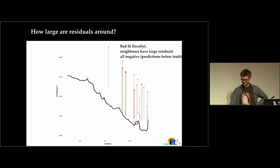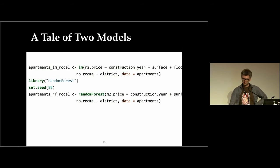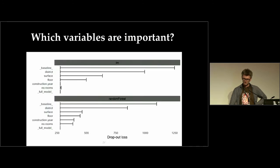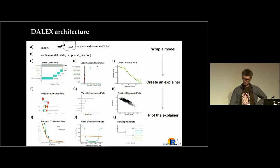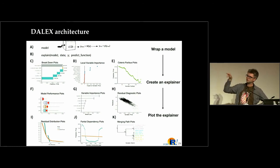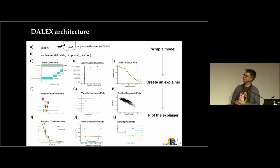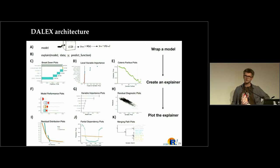This session is about classification and I was presenting regression because it's easier, but DALEX works for classification and survival data as well. The only requirement is that the model needs to respond with a continuous numerical value. You can specify a link function to link votes from a random forest to probability, and then you can explain the probability or odds of something with the same approach.